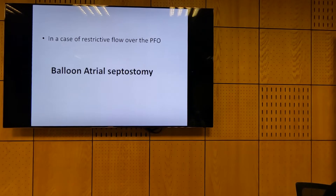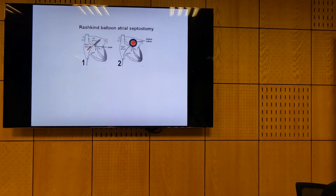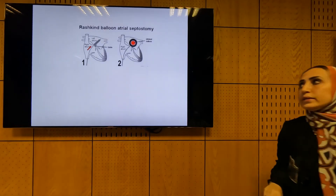If you have restrictive flow — like a small PFO — you need to increase its size by doing a balloon atrial septostomy. The famous name of this procedure is the Rashkind procedure. This is a commonly used procedure in pediatric cardiology, done nowadays bedside in the NICU guided only by echo. In the old days we did it under fluoroscopy in the cath lab, but now it's easy and all pediatric cardiologists know how to do it.